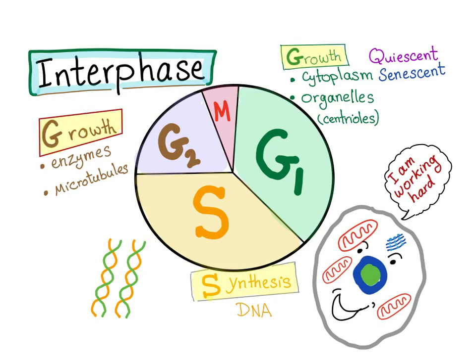So the cell decides to replicate. It will begin to prepare for that by growing in size, by accumulating more protein, forming more organelles like mitochondria and ribosomes, and of course duplicating its centriole — if we are talking about animal cells, because there are no centrioles in plant cells.